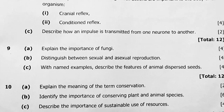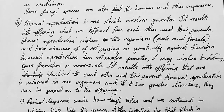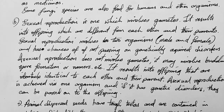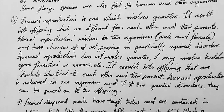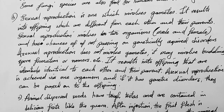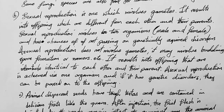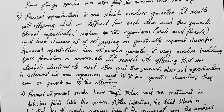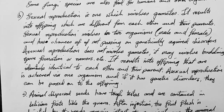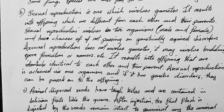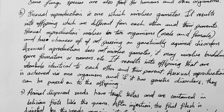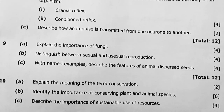Question 9b: distinguish between sexual and asexual reproduction. Sexual reproduction involves gametes — sex cells — resulting in offspring different from each other and their parents. It involves two organisms, male and female, and has chances of not passing on genetically acquired disorders. Asexual reproduction does not involve gametes; it may involve budding, spore formation, or runners. It results in offspring identical to each other and their parents genetically. Asexual reproduction is achieved via one organism, and if it has genetic disorders, they can be passed on to offspring.